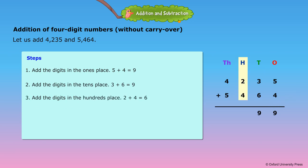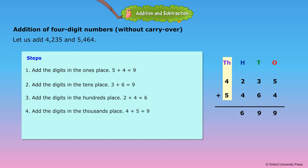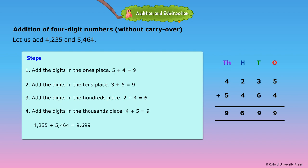Step 3: Add the digits in the 100's place. 2 plus 4 is equal to 6. Step 4: Add the digits in the 1000's place. 4 plus 5 is equal to 9. Therefore, 4,235 plus 5,464 is equal to 9,699.